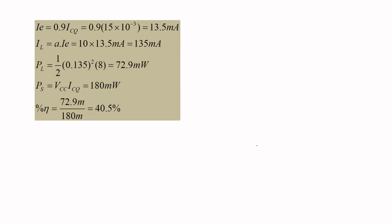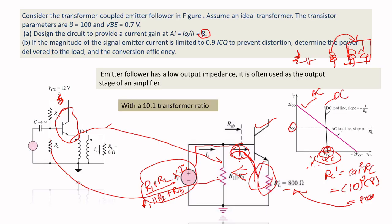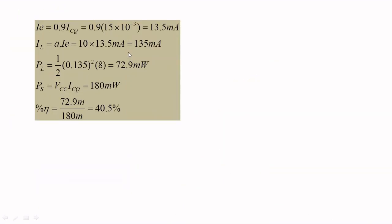Now the final part: the magnitude of the signal emitter current is limited to 0.9 × ICQ to avoid distortion. We need to find power delivered to the load and conversion efficiency. So IE = 0.9 × ICQ = 0.9 × 15 = 13.5 milliamps.